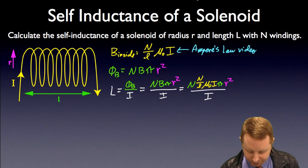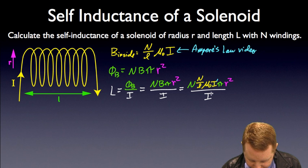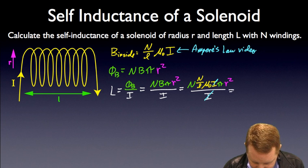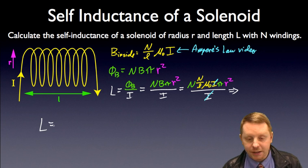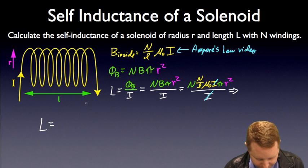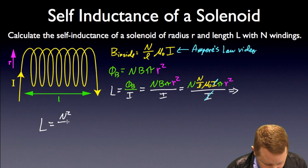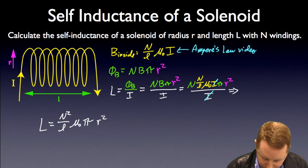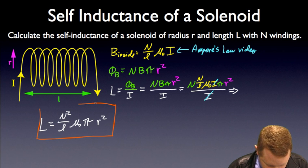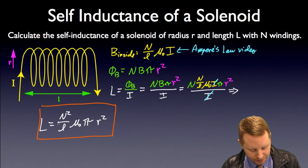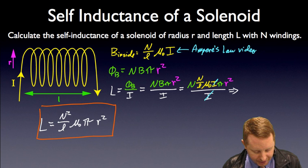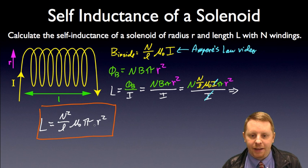Now it's just a matter of simplifying this a little bit. I have current there and there, those make a ratio of 1, which implies that our self-inductance of our solenoid is just going to be N times N, N squared, the number of windings, divided by the length, times mu-0 times pi, times R squared. So there we go. The self-inductance of a solenoid of radius R and length L with N number of windings: N squared over L, mu-0 pi R squared.